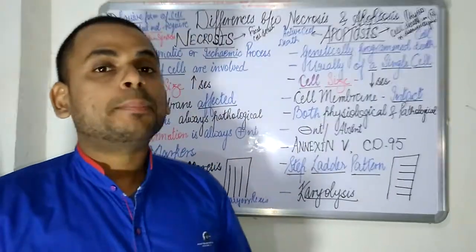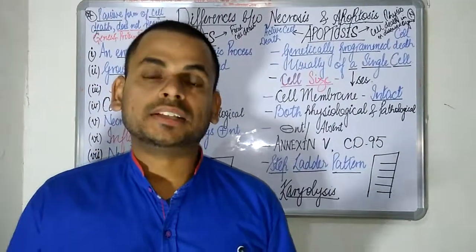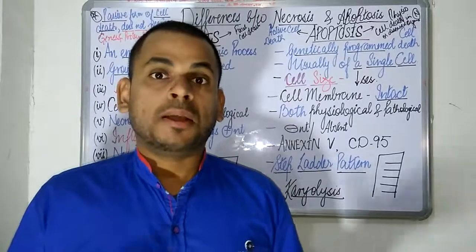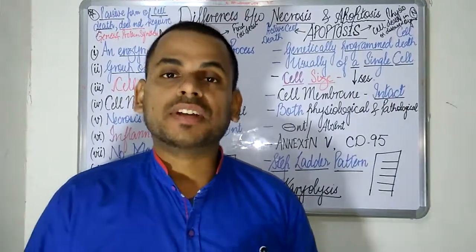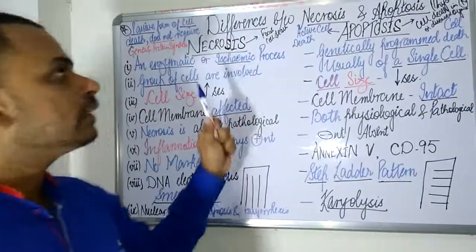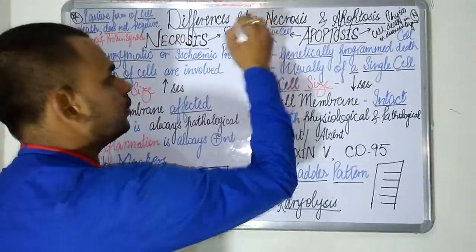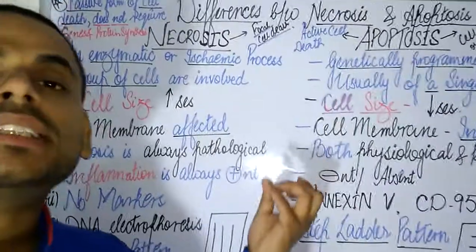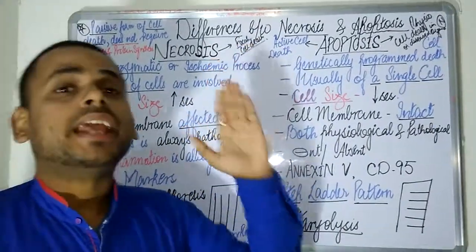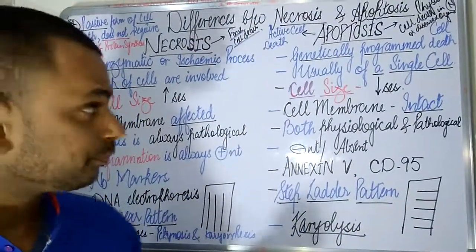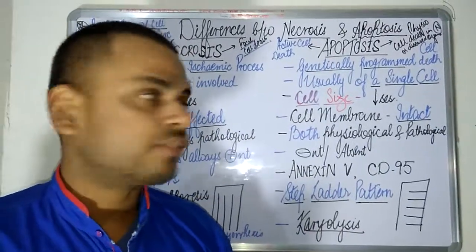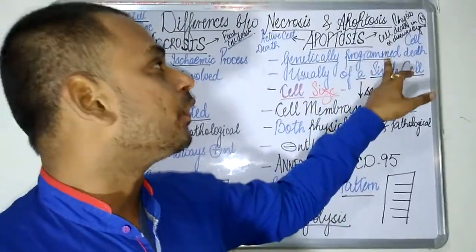Now we will focus on the important differences between these two types of cell death — necrosis and apoptosis. Both are cell death, but there is a very remarkable difference between them. Necrosis is a focal cell death occurring within certain focal areas of the body, tissues, or organs due to an injury or insult to the cellular membrane, whereas apoptosis is a genetically programmed phenomenon — a programmed cell death.